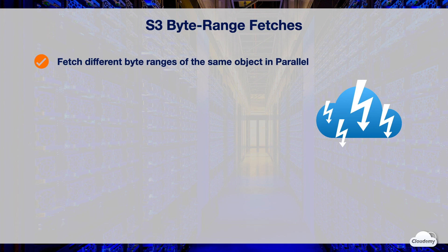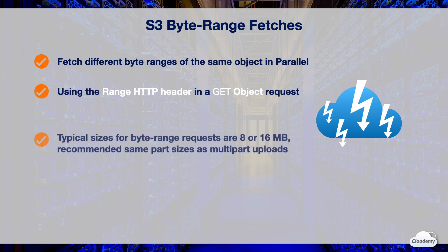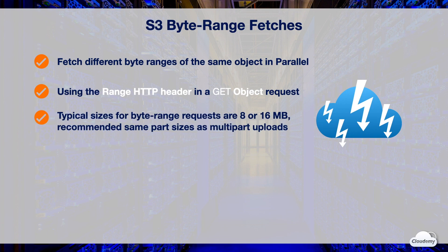Byte-range fetches allow concurrent connections to S3 to fetch different byte ranges from within the same object. This helps you achieve higher aggregate throughput than a single whole-object request. Fetching smaller ranges of a large object also allows your application to improve retry times when requests are interrupted. Using the Range HTTP header in a GET object request, you can fetch a byte range from an object, transferring only the specified portion. Typical sizes for byte-range requests are 8 megabytes or 16 megabytes.